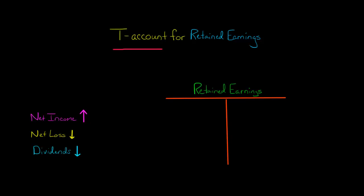In this video, I'm going to show you how to use a T-account for retained earnings. There are three main accounts that affect retained earnings. When a company posts net income, retained earnings is going to go up. When it posts a net loss, retained earnings is going to go down. And when the company declares dividends, retained earnings is also going to go down.